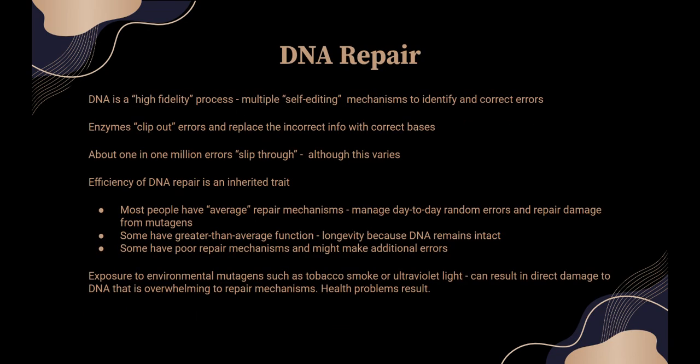DNA is a high-fidelity process. We each need a complete copy of the whole script with every word spelled correctly — we can't have extra. There are a lot of editing mechanisms and quality control. We talked about checkpoints; we have enzymes that can clip out errors and replace the incorrect sequence with the correct sequence of bases. But about 1 in 1 million errors slip through, and that can vary by individual. The efficiency of your DNA repair mechanism is inherited from your parents. Most people have average repair mechanisms in their youth and manage day-to-day random errors and repair damage from mutagens.